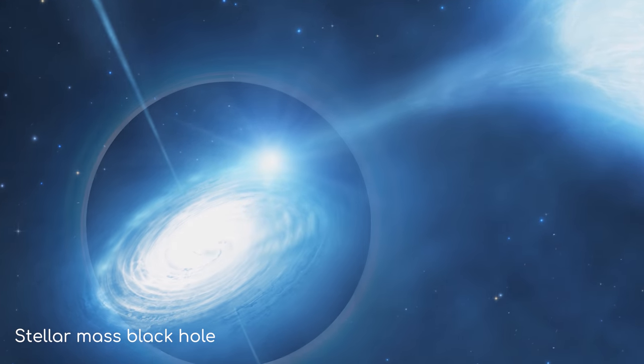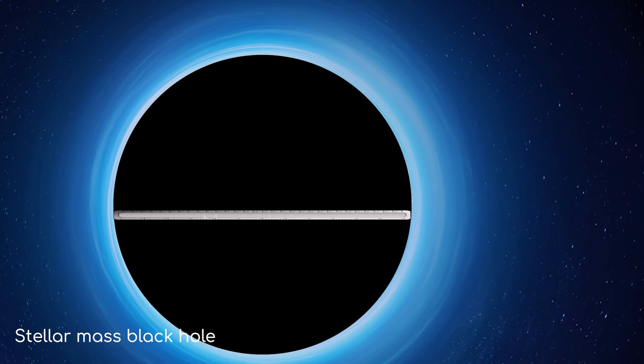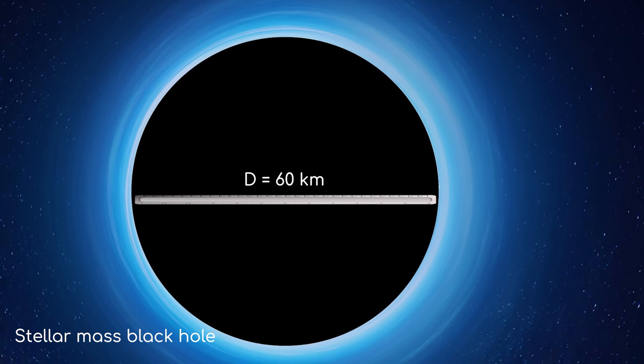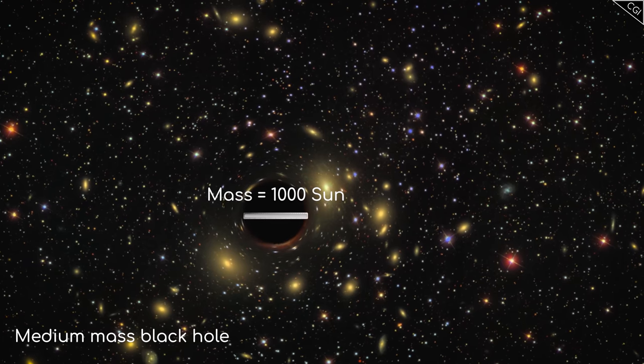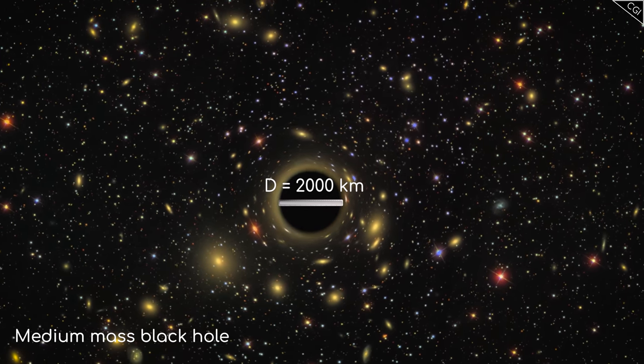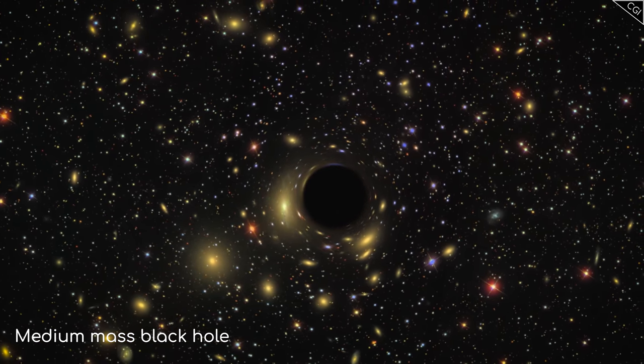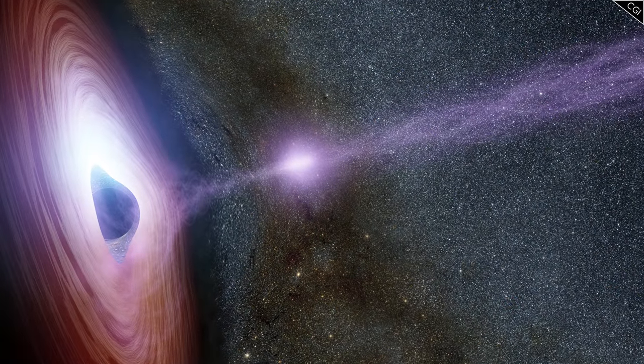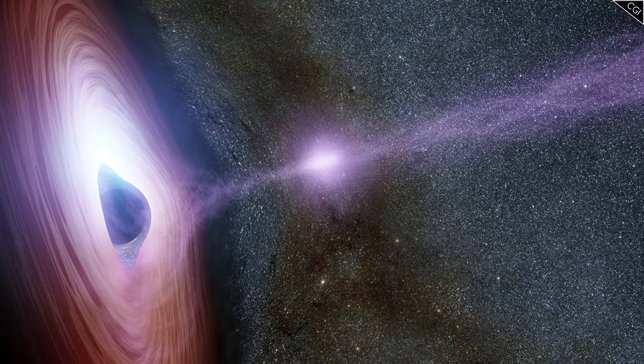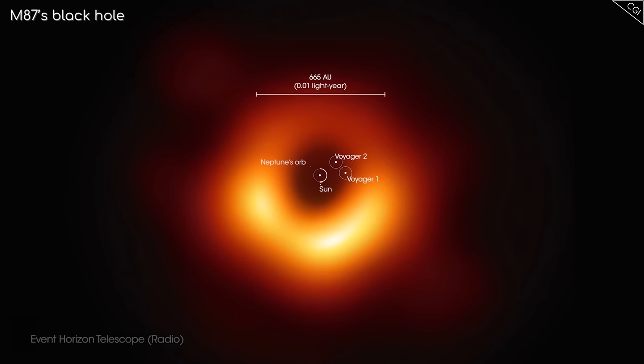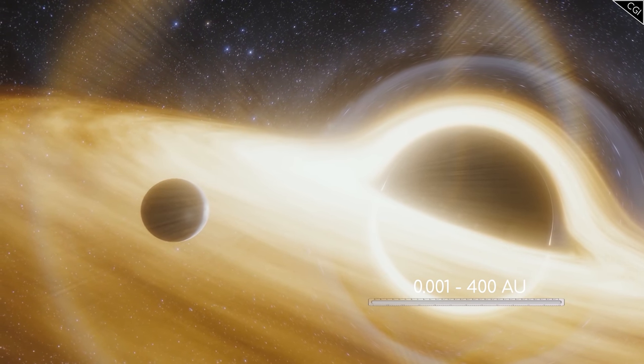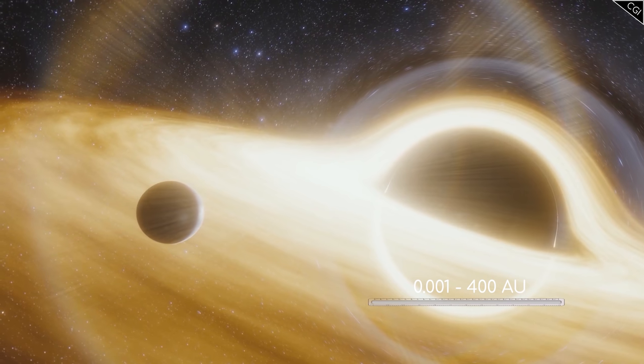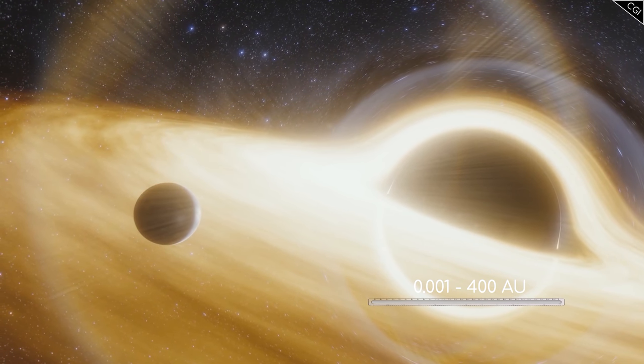Stellar black holes have a mass equal to 10 times our Sun, and have a diameter equal to 60 km. Intermediate black holes are the mass of 1,000 Suns, and fit all of that into a diameter of 2,000 km, which is still much smaller than the Earth. It is the largest black holes that really dwarf us, with masses between 100,000 to 10 billion times the mass of the Sun, and sizes ranging from 0.001 to 400 astronomical units, an astronomical unit being the distance from the Earth to the Sun.